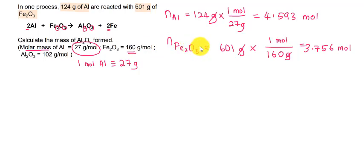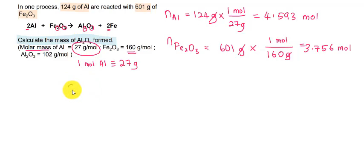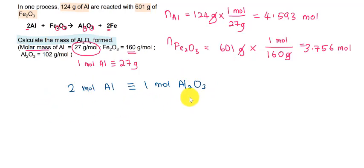To find the quickest answer, look at what the question asks. Since the question asks to calculate the mass of aluminium oxide formed, the best approach is to compare each reactant with aluminium oxide. From the stoichiometric equation, the relationship between aluminium and aluminium oxide is: 2 moles of aluminium will produce 1 mole of aluminium oxide. This relationship comes directly from the balanced equation — if your equation is not balanced correctly, your answer will be wrong.